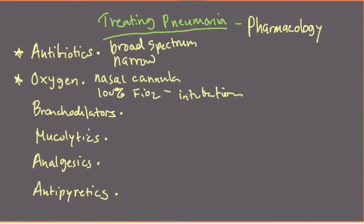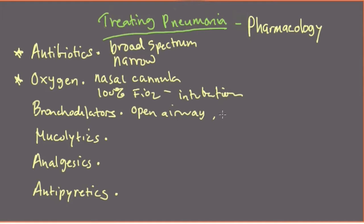Some other modalities used pretty frequently — though maybe not quite as essential as antibiotics and oxygen — include bronchodilators. Bronchodilators are typically inhaled medications, though they can also be given by injection. For this we'll talk about things like albuterol, which are inhaled medications that are vaporized and breathed in by the patient. They open up the airways and prevent bronchospasm.